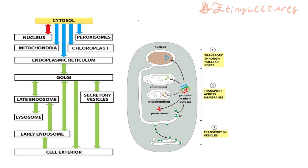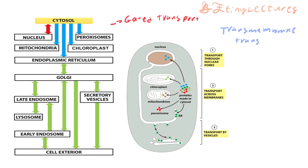Within the cell we have three types of membrane-enclosed transport, color-coded for clarity. The first is called gated transport, which relates to the nucleus — information going from the cytosol to the nucleus or vice versa. The second is transmembrane transport, involving the mitochondria, chloroplast, peroxisome, and endoplasmic reticulum. The third is vesicular transport.